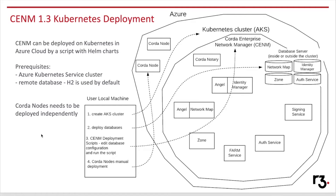The difference with normal deployment is that the Kubernetes deployment currently doesn't support Angel for the signing service. The typical deployment procedure is that you need to create an Azure Kubernetes cluster — we provide basic instructions but it's up to the user how the cluster is created. Out of the box, CENM is provisioned with embedded H2 databases, but you can set up remote databases like Postgres or MS SQL, either inside or outside the cluster. In this example deployment, I will deploy a Postgres database inside the cluster.